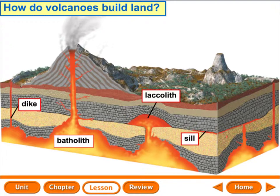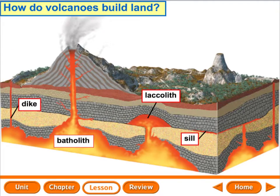Sometimes when sills are trying to form, they may dome upward, and that forms a laccolith, which raises all the rock above it and creates a small hill. The largest and deepest of all chambers or formations is called the batholith — it's huge and very irregular in shape, not horizontal, dome-shaped, or vertical. When lava comes out of the vent, it's liquid and forms a solid layer of rock as it hardens. Over years of eruptions, it gets higher and higher, increasing the height of the volcano and building new land.